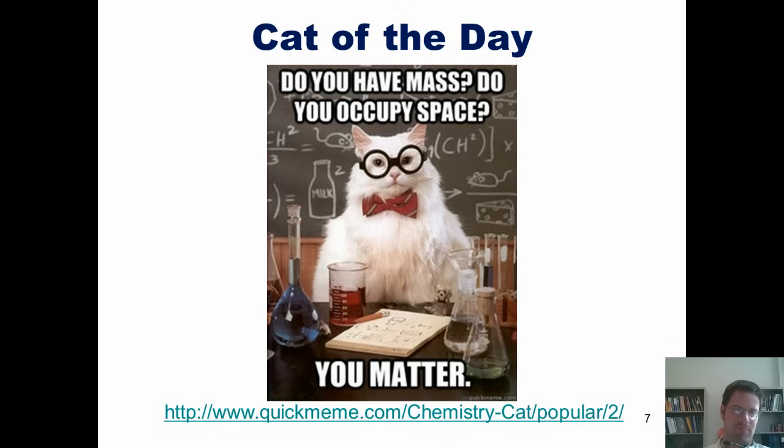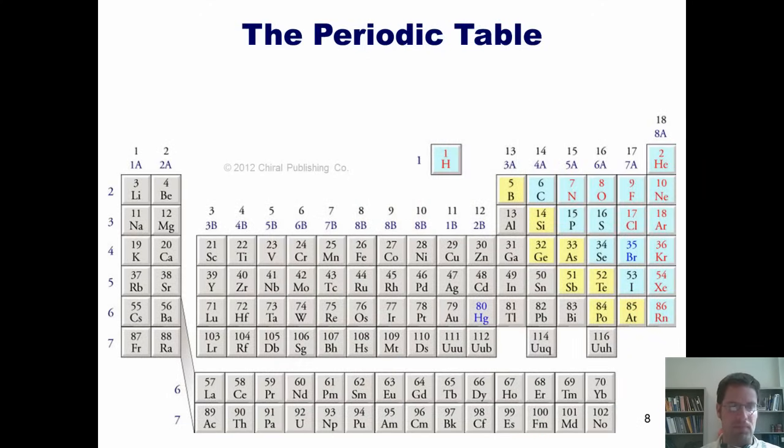All right, so my simple definition of an element was the things found on the periodic table. But what is the periodic table, you ask? Well, the periodic table is this. It's an organized table showing every chemical element known to humankind. By way of interest...